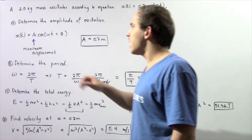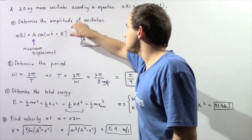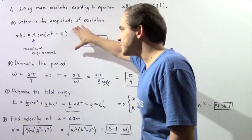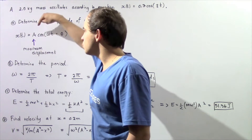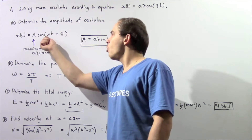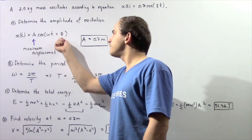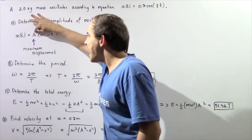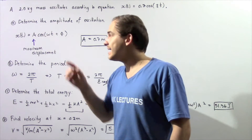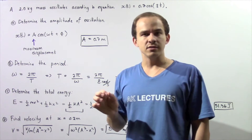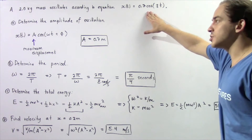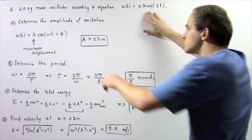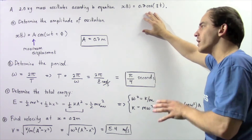Using this information, we'd like to calculate in part A the amplitude of our oscillation. Recall the general equation of our position function: X(t) = A·cos(ωt + φ), where φ is our phase angle, ω is our angular frequency, and A is the maximum displacement — giving us our amplitude. Looking at the given equation, the corresponding A is 0.7, so the amplitude is equal to 0.7 meters.